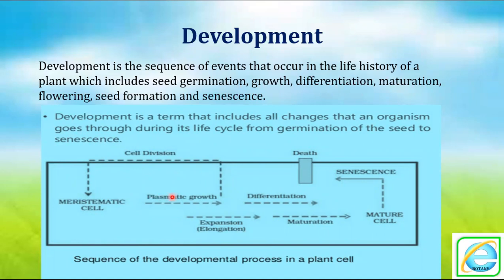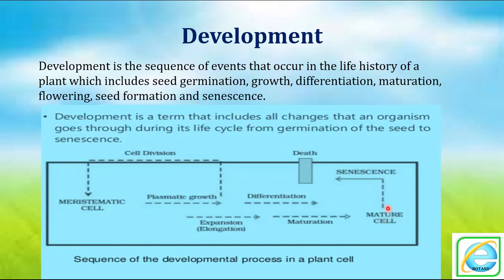In the first video, we already studied the three phases of growth: cell division, cell expansion, and cell maturation. Undifferentiated meristematic cells get differentiated with the help of cell division — cells divide and redivide. After division, these undifferentiated cells expand, meaning elongation in their size. After elongation, these cells get mature, and matured cells develop the ability to perform a specific function.